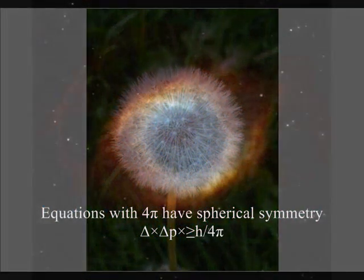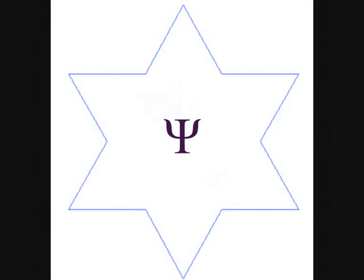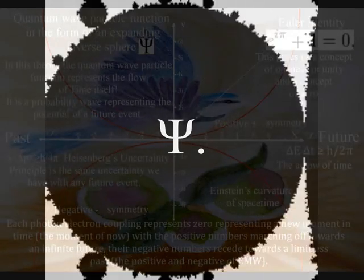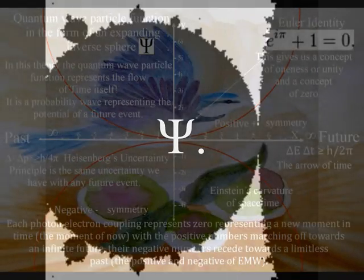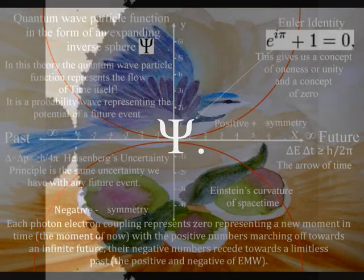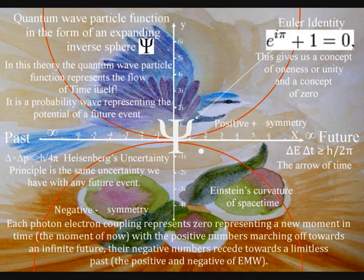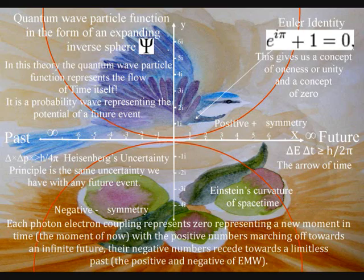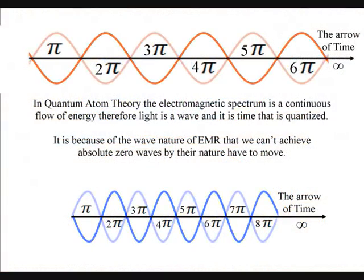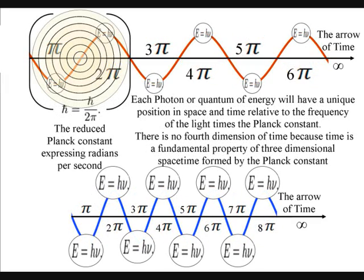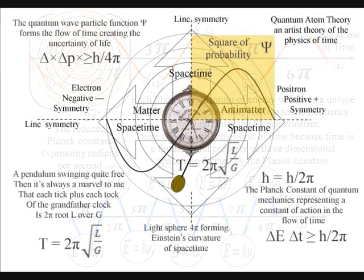It is this dynamic universal geometry that human mathematics is based upon. In this theory, fractals are formed by the repetition of the wave function, continuously collapsing and reforming — a kind of geometrical and mathematical repetition. This has gauge symmetry, and we can re-gauge each new photon at zero, representing a new moment in time, the moment of now, with the positive numbers marching off towards an infinite future and their negative numbers receding towards a limitless past — the positive and negative of electromagnetic waves.